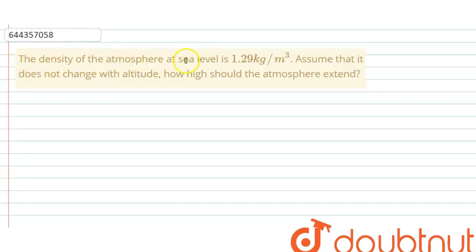The density of atmosphere at sea level is 1.29 kg per meter cube. Assume that it does not change with altitude. How high should the atmosphere extend? Okay, so as we know that pressure due to atmosphere is 1.01 into 10 power 5 pascal.